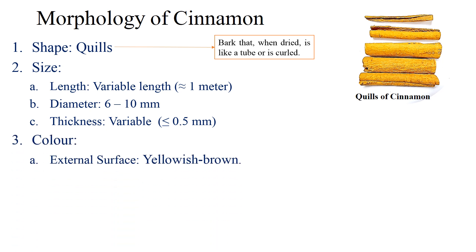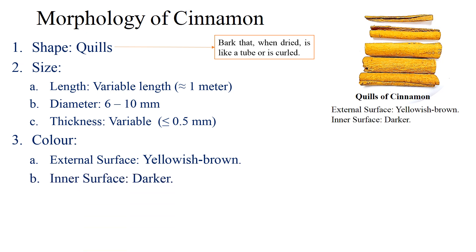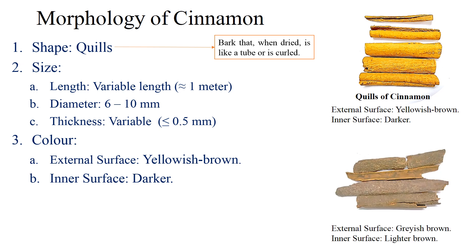Color: the external surface of cinnamon is yellowish brown and the inner surface is somewhat darker. But in a number of market samples, the external surface is found to be grayish brown and the inner surface lighter brown. These are not the quills as specified in pharmacopoeias; these are chips of cinnamon and usually consist of outer bark pieces.